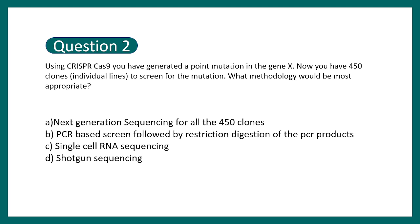First strategy is next generation sequencing of all the 450 clones. B is PCR based screens followed by restriction digestion of the PCR products. C is single-cell RNA sequencing. D is shotgun sequencing. You can possibly do next-gen sequencing and sequence whole genome of every 450 clones but that's labor intensive, time-consuming and above all it is really expensive. So always you should think about some solution which is economically feasible and elegant.